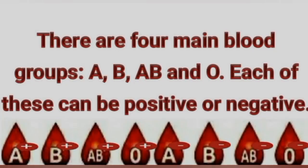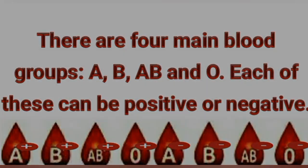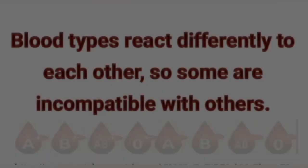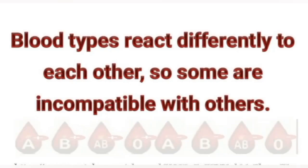There are 4 main blood groups: A, B, AB, and O. Each of these can be positive or negative. Blood types react differently to each other, so some are incompatible with others.